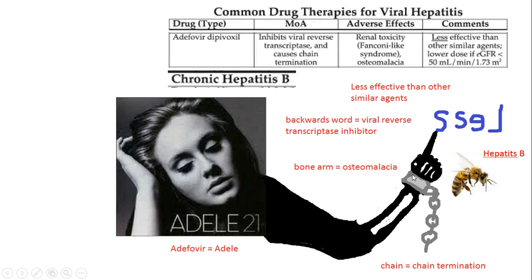The B hovering near her hand reminds you it's hepatitis B — it can't sting her because she has bone arms. I did not include renal toxicity and Fanconi-like syndrome in this picture, which I probably should have. The bone arm does cover osteomalacia — bad bone.